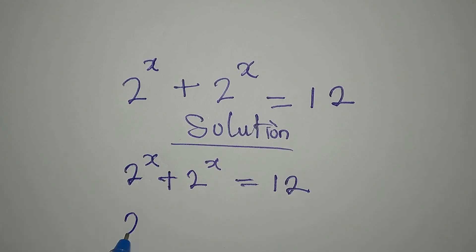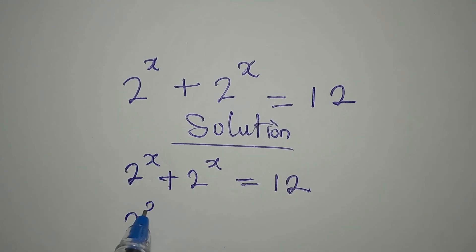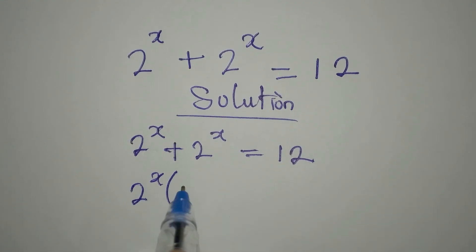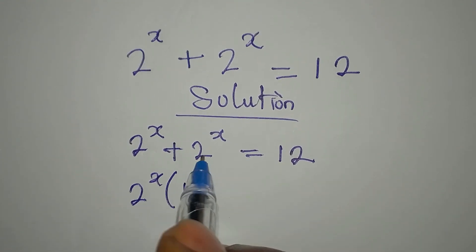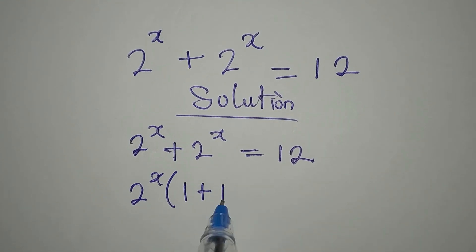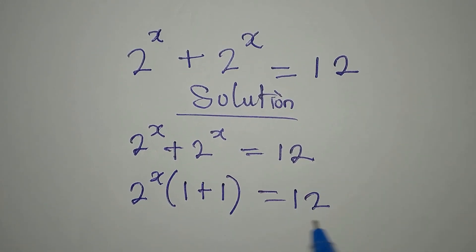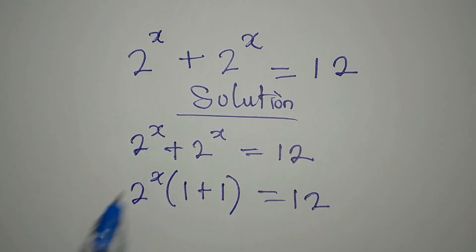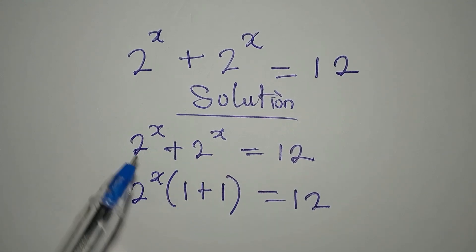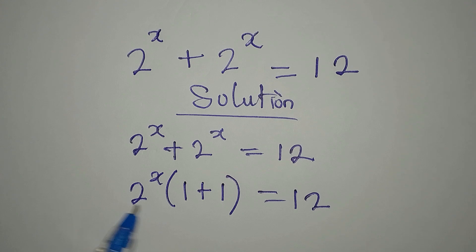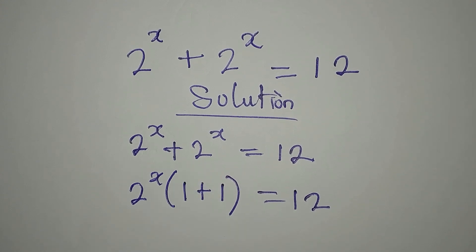Better still, we factorize 2 to the power of x because it belongs to both terms. We have 2^x times (1 + 1) equals 12. If you open this bracket, it gives you back 2^x times 1, which is 2^x, then 2^x times the other 1 gives the same thing.